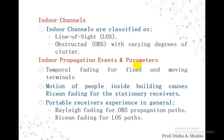Indoor channels can be classified as line of sight (LOS) and obstructed (OBS) with varying degrees of clutter. These are the two indoor channels possible: transmission in indoor propagation can either be line of sight or obstructed by different objects causing different degrees of clutter.